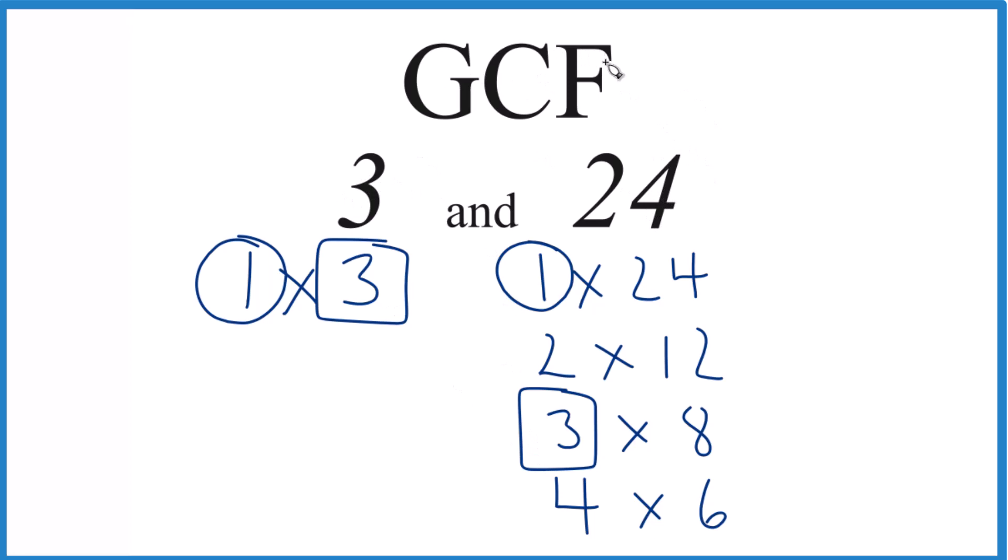So the answer to our question, the GCF for 3 and 24 is 3. There are other ways you could do this, like prime factorization, but this method works pretty well for smaller numbers. This is Dr. B. Thanks for watching.